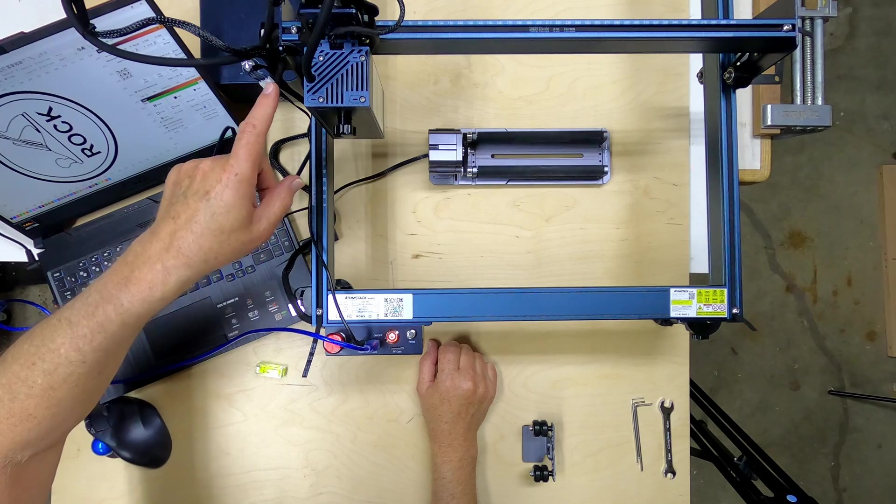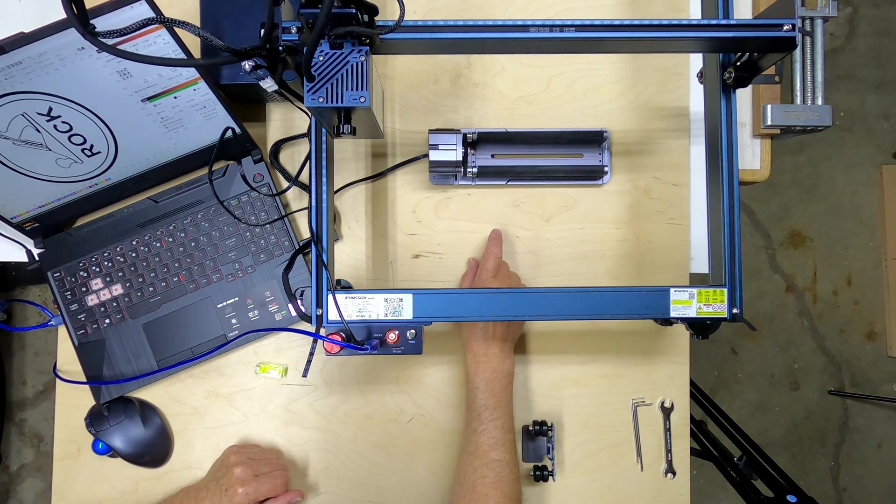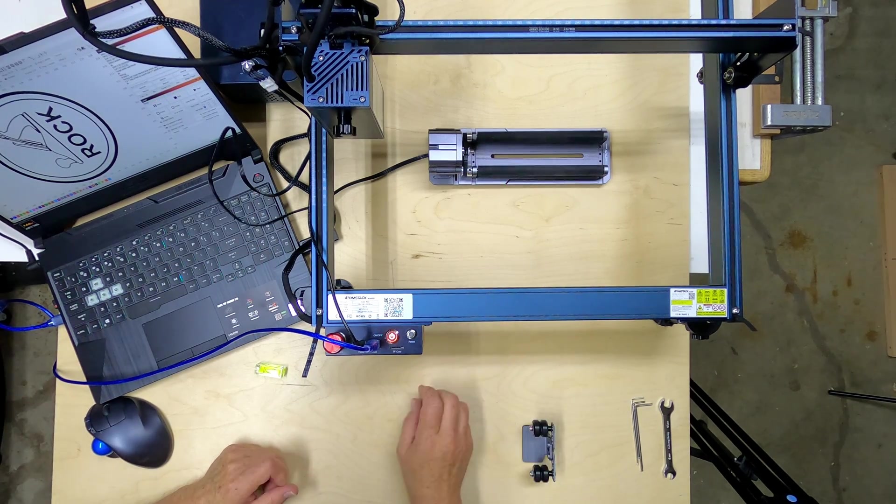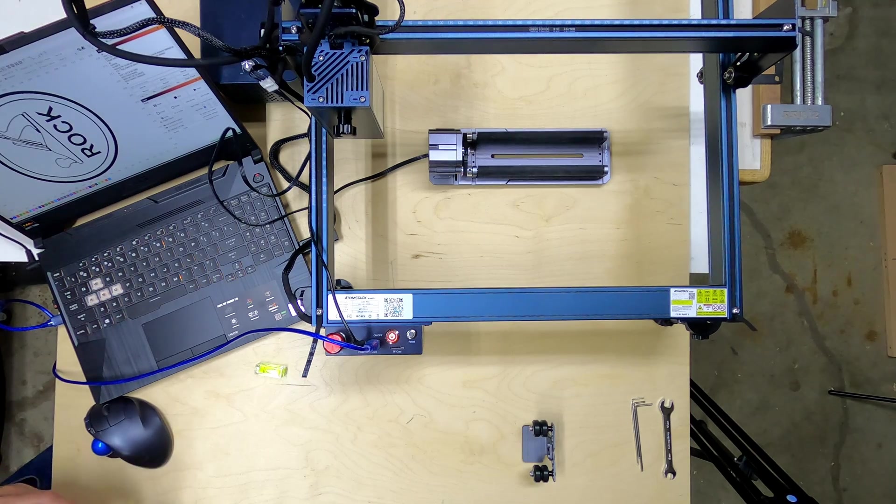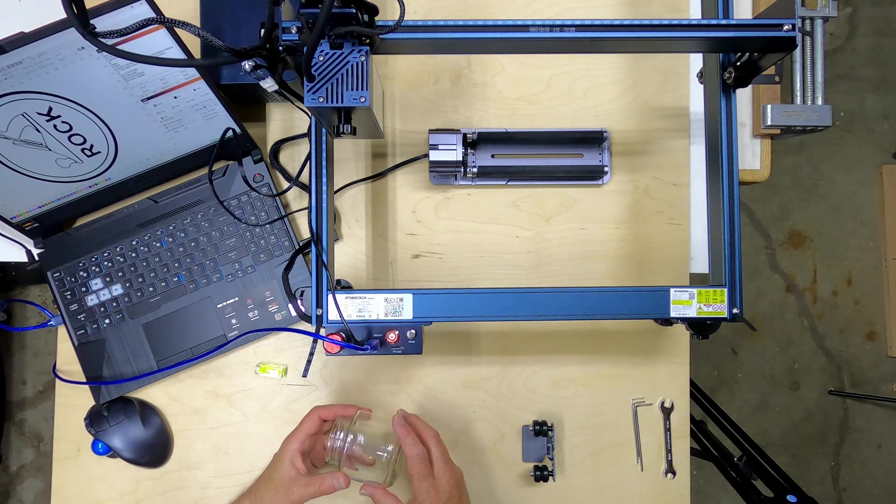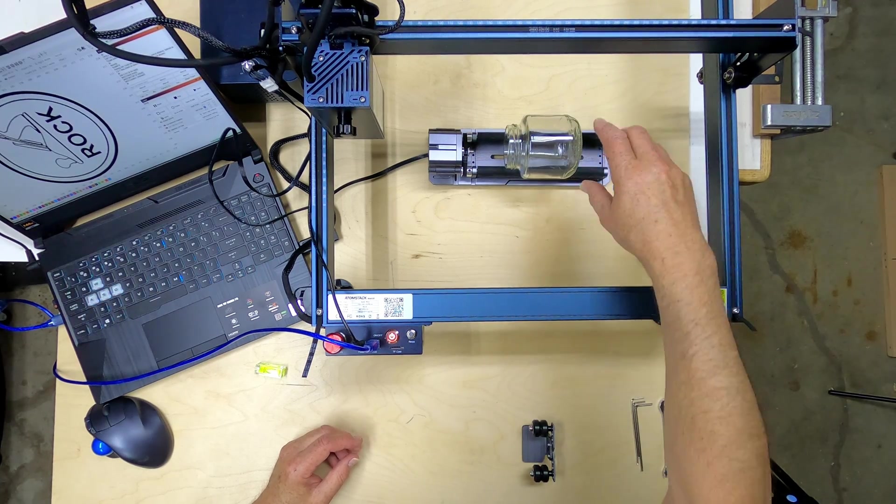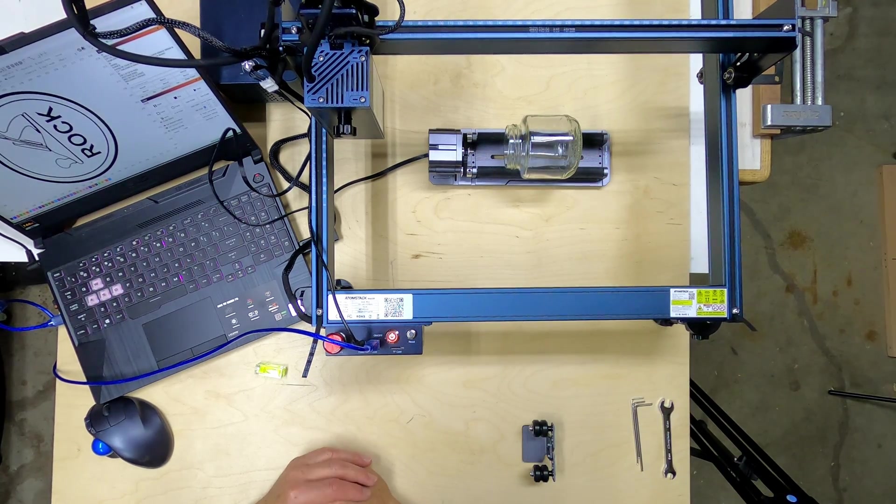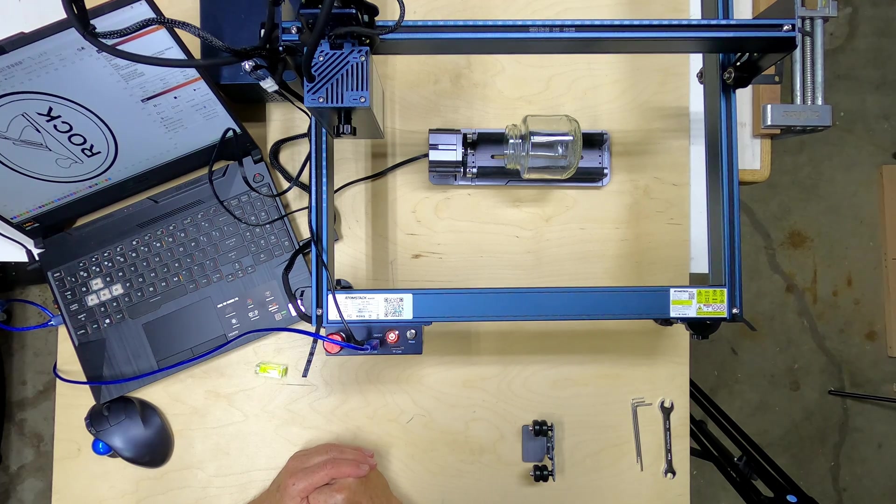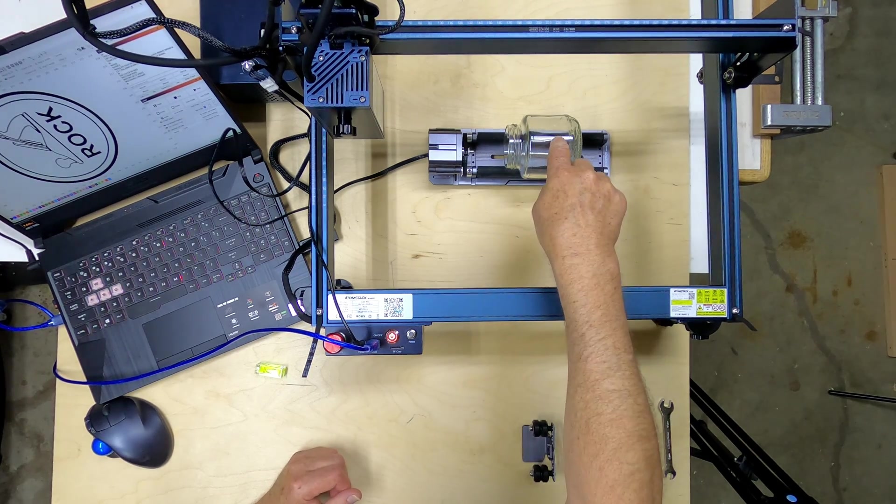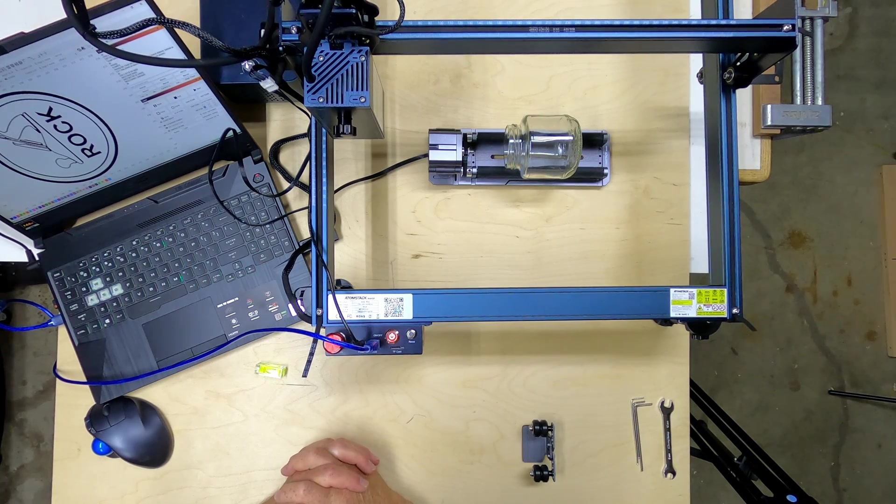Now let me just turn on the power. It's going to home to the end of the gantry and the rotary roller was spinning. Now the first thing I'm going to want to engrave is this small jar. To engrave glass I need to paint that black, so I will take this, paint it black and then I will come back.